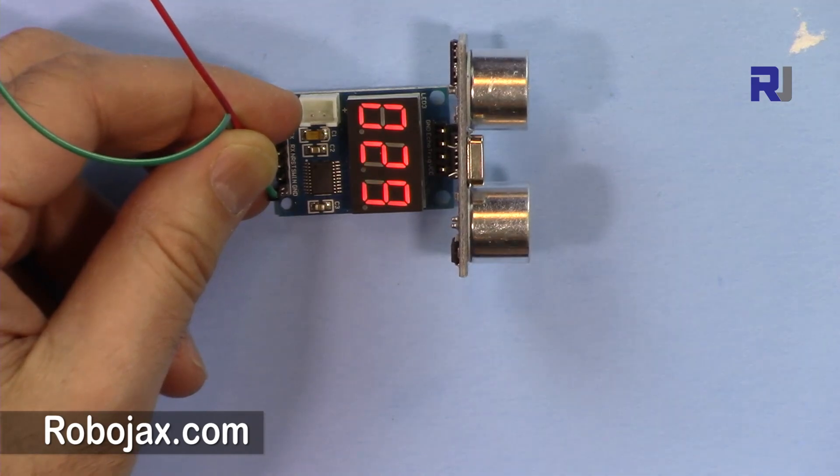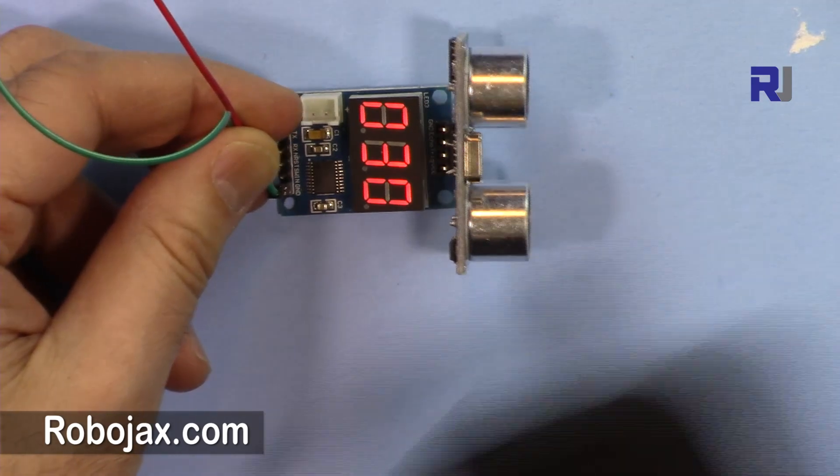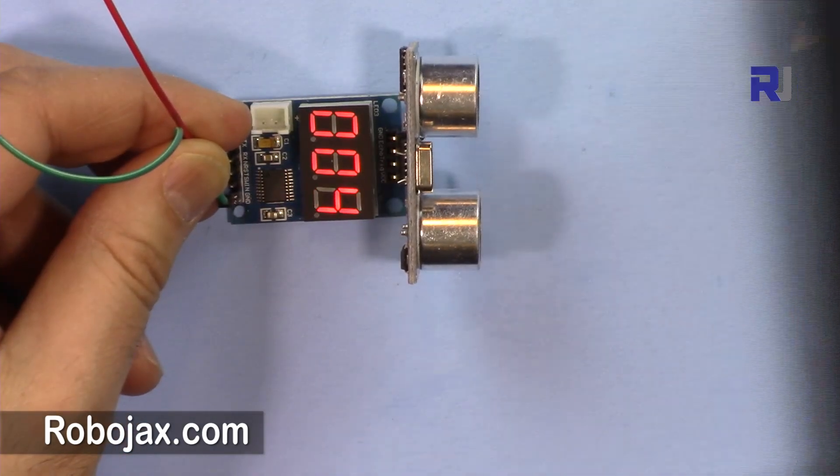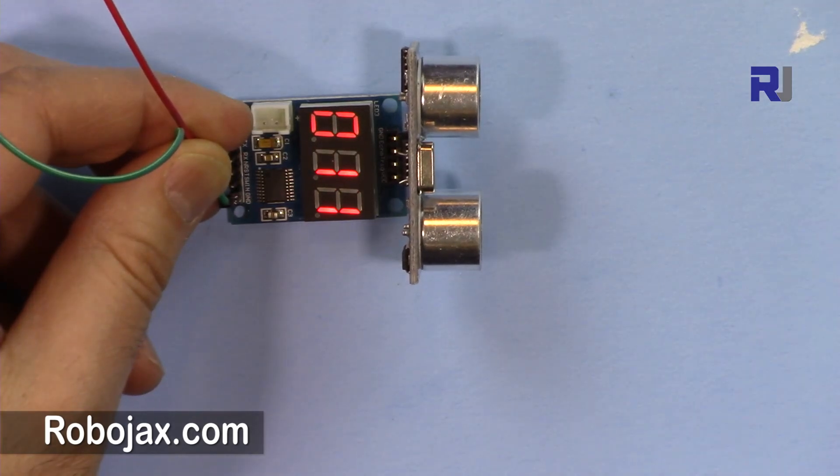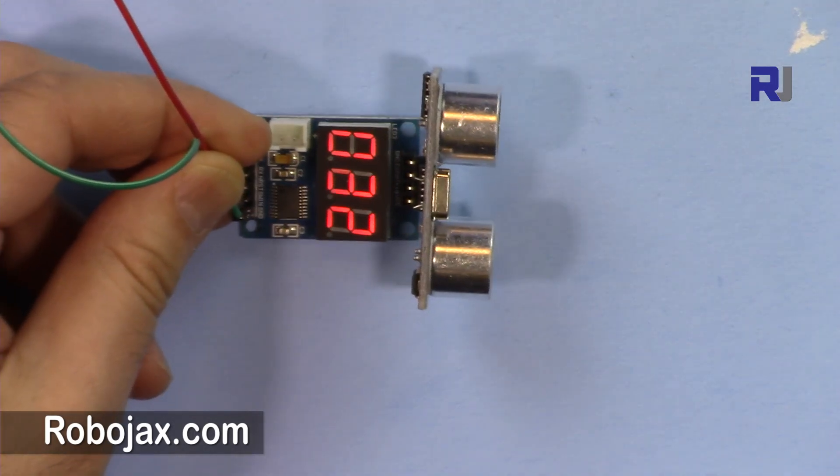So this is the device. I'm putting my phone here—it shows 5 centimeters, 11 centimeters, and so forth. It can measure the distance.